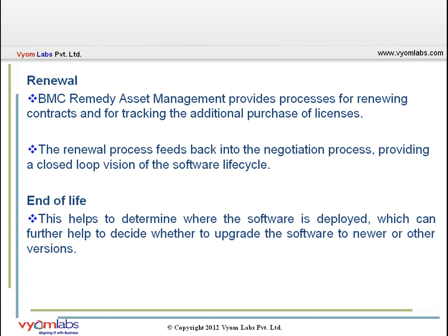After maintenance, the software asset may enter the renewal stage. Whenever software contracts are nearing expiration, BMC Remedy Asset Management can send notifications. It provides processes for renewing contracts and tracking additional license purchases. The renewal process feeds back into the negotiation process, providing a closed-loop vision of the software lifecycle — the asset re-enters negotiation, then procurement, then deployment.